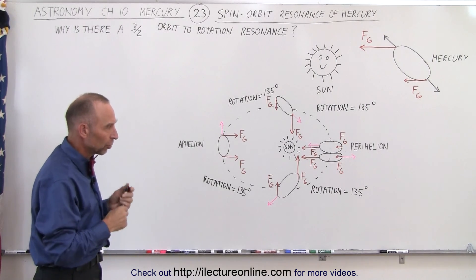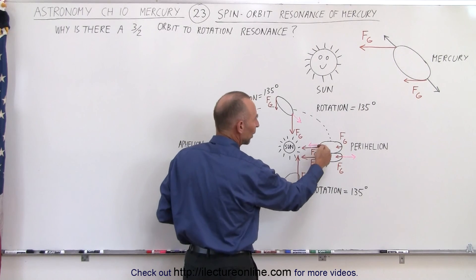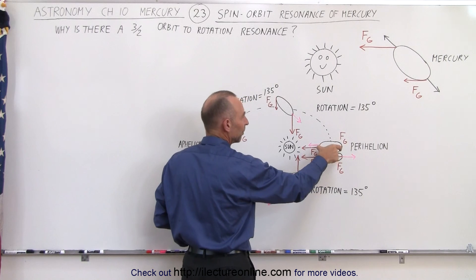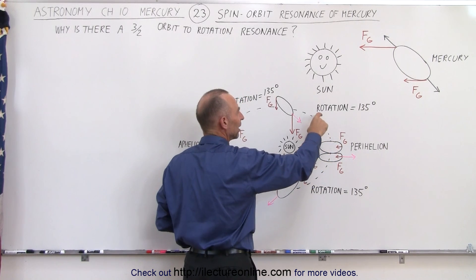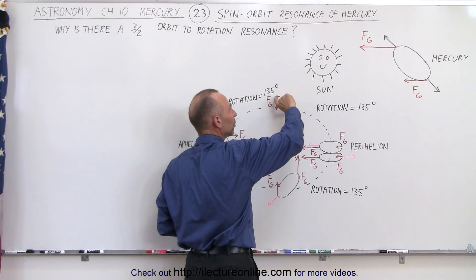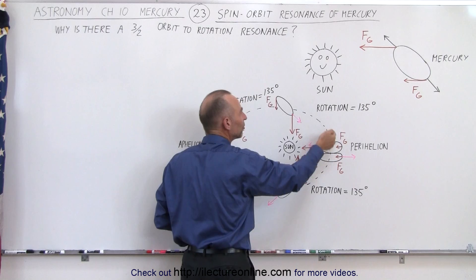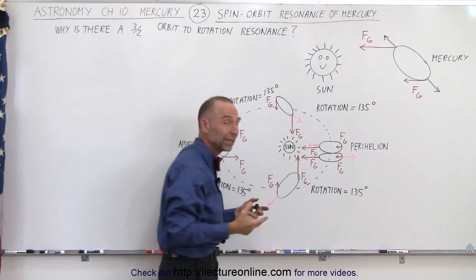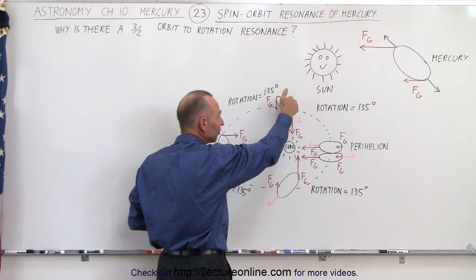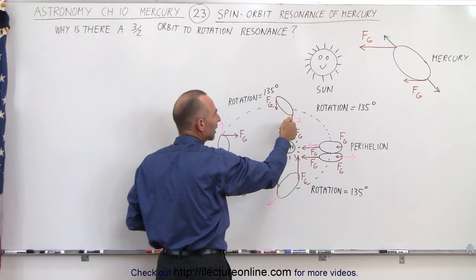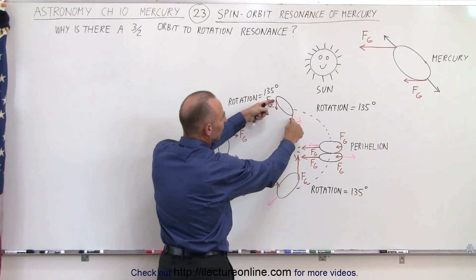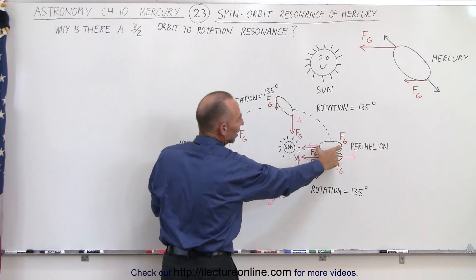Let's take a closer look. Starting at one position, the elongated end pointing toward the Sun is pulled more strongly than the other side. As Mercury rotates on its axis, it rotates through 135 degrees while traveling only 90 degrees through its orbital motion. You can then see that the elongated end is just past the vertical point — this side is still attracted more strongly than the other side because it's closer to the Sun, just not quite as different as it was before.